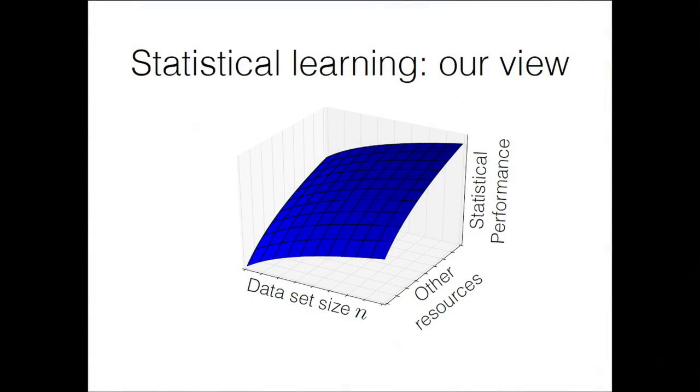We need a much broader view, either as theoreticians or as practitioners. We want 3D or more pictures where we say we have multiple axes along which we want to measure performance: the amount of data we need to collect, our statistical performance, and then other resource constraints. This might be how much computation it's going to cost — how many icebergs are we melting? — or how many sensitive disclosures do our machine learning algorithms make, or how much sensitive data do we need to collect?